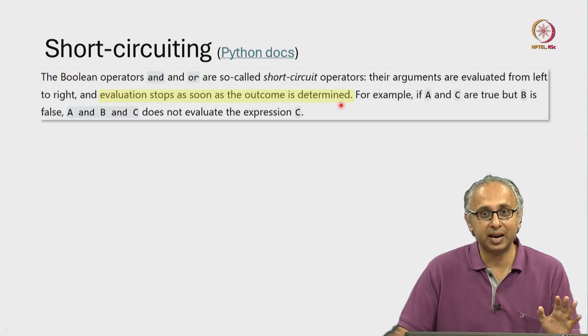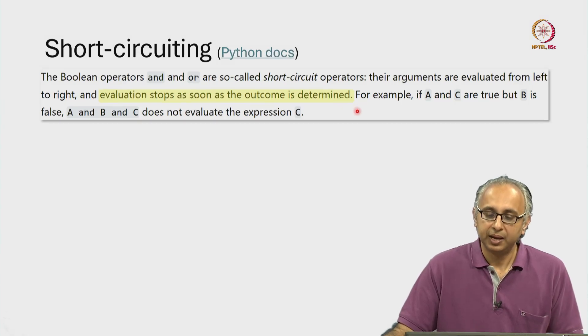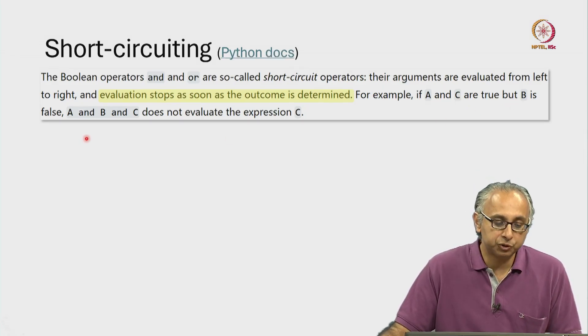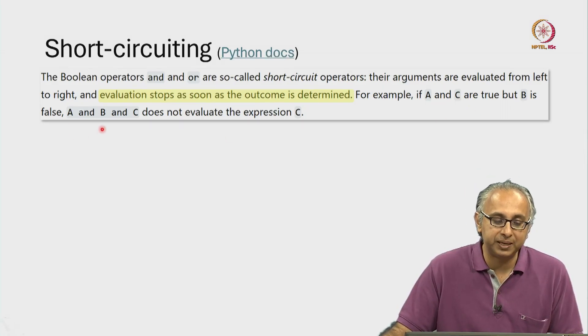An evaluation stops as soon as the outcome is determined. We will understand what this statement means in a minute. They have an example here. For example, if A and C are true and B is false and you are trying to evaluate A and B and C.